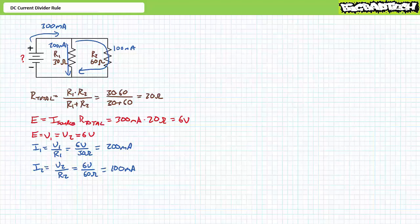Conversely, the larger 60 ohm resistor presents a path with twice the resistance of the 30 ohm path, and as a result, current through the 60 ohm resistor is half that of the 30 ohm resistor. It makes sense — it's almost like source current is dividing through these resistors inversely proportional to the resistance value. More on this observation in a moment.